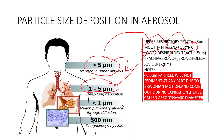In the pulmonary alveoli, particles of size 1 to 2 micrometers are deposited. Particles of 2 to 5 micrometers are deposited in the trachea, bronchi, or bronchioles. Greater than 5 micrometers deposits in the upper respiratory tract — mouth, pharynx, or larynx. This covers particle size distribution within aerosol products.